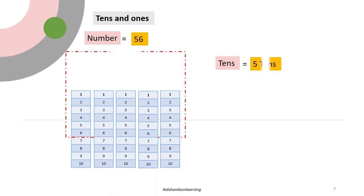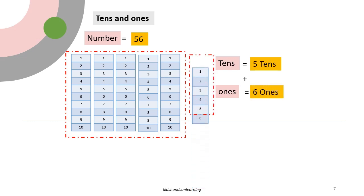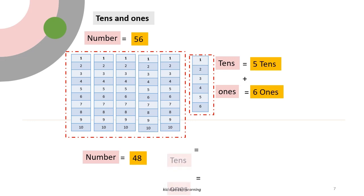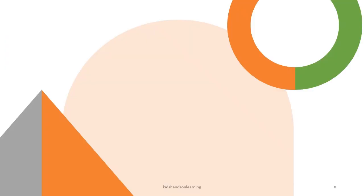56 is equal to 5 tens plus ones. 48 is equal to 4 tens plus 8 ones. Number is 24.